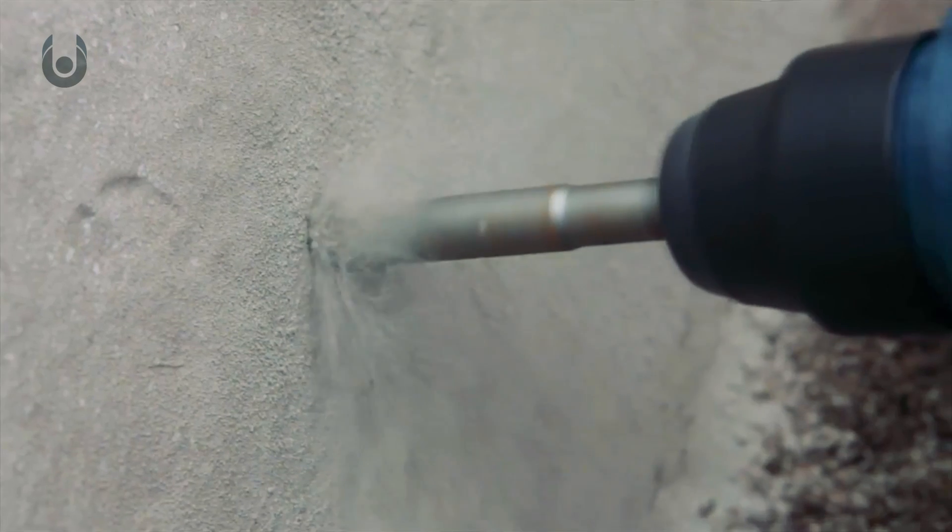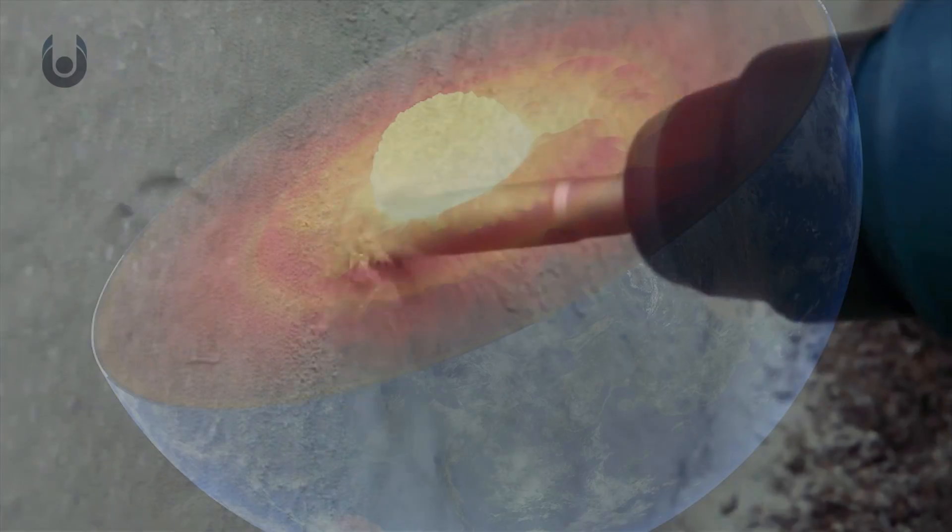But for our experiment, we're going to assume everything is solid and stationary. By the way, how do we know that the inner core is solid and the outer core is liquid?